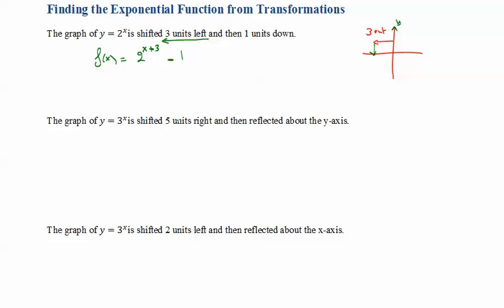5 units to the right means we subtract 5 from the exponent. Then it is reflected about the y-axis. When you reflect about the y-axis, any x basically becomes negative x — you reflect it to the other side.